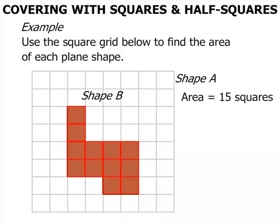So shape B has an area equal to 12 squares. It took 12 squares to cover the shape.